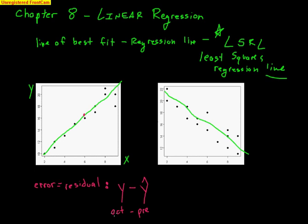An easy way to remember the order is that A comes before P in the alphabet, so actual goes first: actual minus predicted. Here's another example — a black dot right on the line has a residual of zero because actual minus predicted was exact. For this other point, there's the predicted value on the line, and the distance in between is the residual: y minus y-hat.